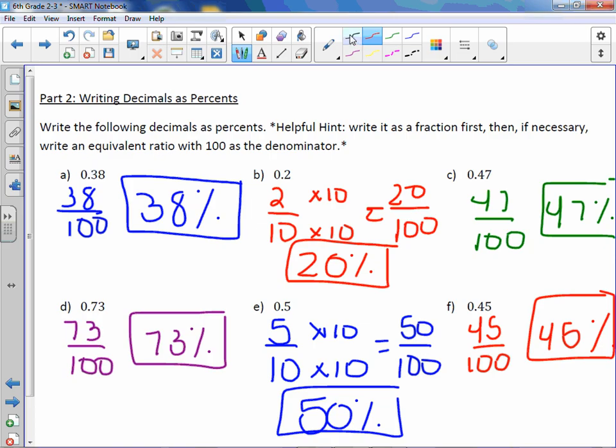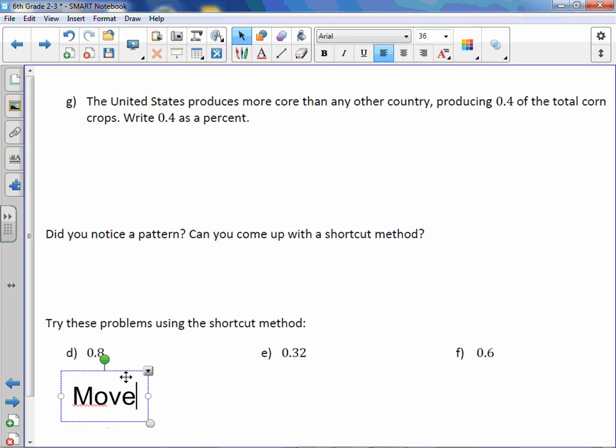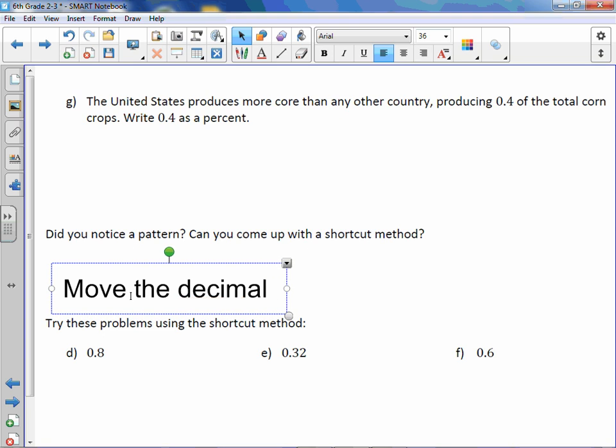We went from 0.38 to 38%, 0.2 to 20%, 0.47 to 47%, 0.73 to 73%, 0.5 to 50%, and 0.45 to 45%. Our shortcut is we take that decimal point, and this time we move it 2 to the right. And when you have an empty space, you fill it with 0. So your shortcut method is move the decimal point 2 places to the right.